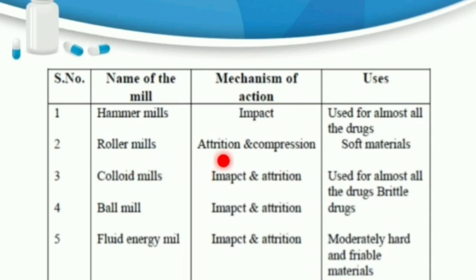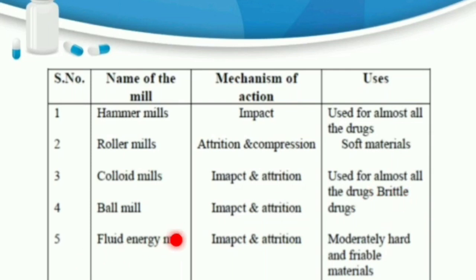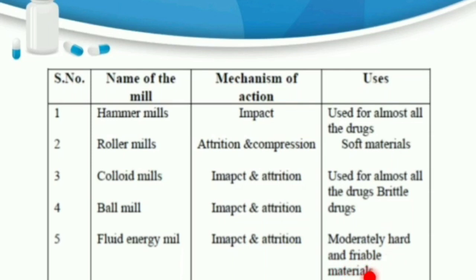In a roller mill, two rollers crush the material between them by compression, so it is only used for soft materials. Colloid mill operates on the principle of impact and attrition and is used for almost all drugs and brittle drugs. Ball mill operates on the principle of impact and attrition and is used for milling dyes, pigments, and insecticides. Fluid energy mill operates on the principle of impact and attrition and is used for moderately hard and friable materials, antibiotics, and vitamins.